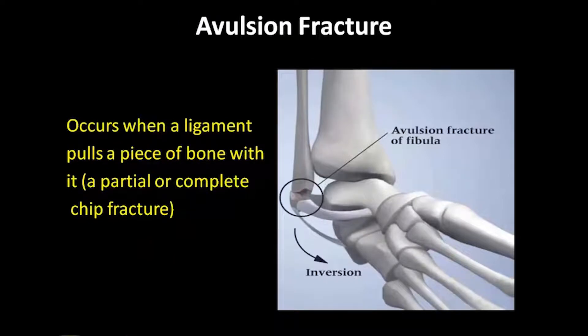The avulsion fracture is an injury that occurs from a significant inversion movement, where the lateral ligaments pull a piece of bone with them. It can be a partial or complete chip fracture.